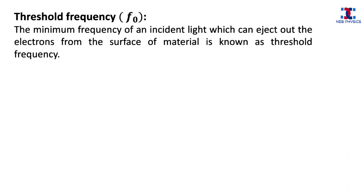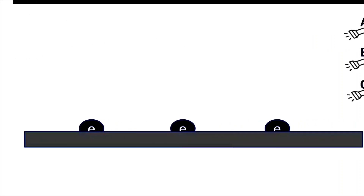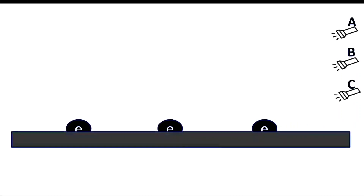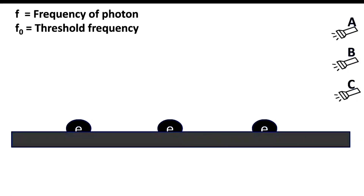Before we move into Einstein's photoelectric effect, it's very important to understand threshold frequency. Threshold frequency is the minimum frequency of an incident light which can eject electrons from the surface of a material. Here, A, B, and C are three different sources of photons. The photons from source A have a frequency greater than the threshold frequency.